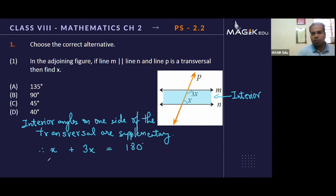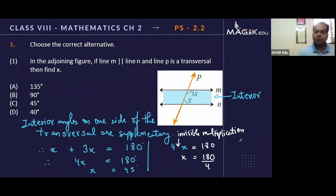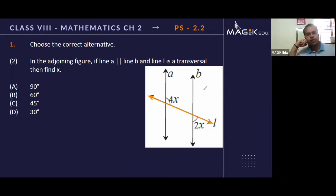That means if I add the two angles mentioned, I should get 180. That's so simple. That means 4x is 180 and x is 45 degrees. There's an invisible multiplication sign between 4 and x. When 4 is shifted or transposed, it becomes 180 upon 4, and division gives us 45.